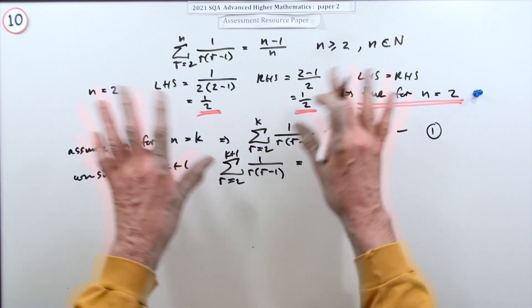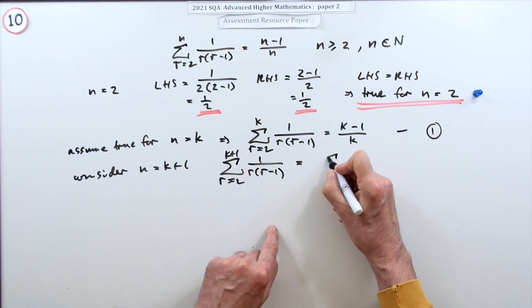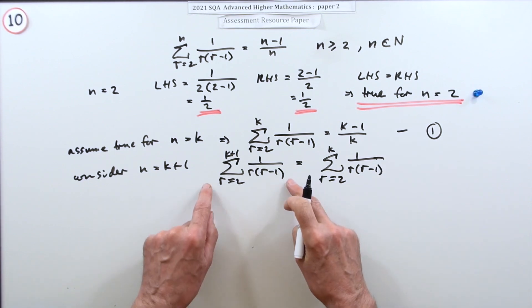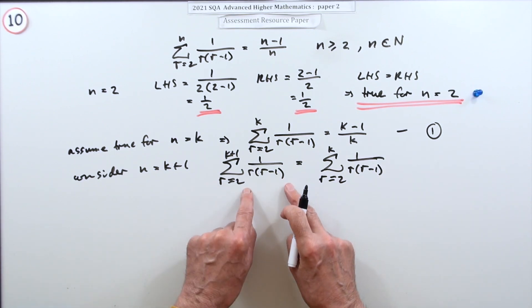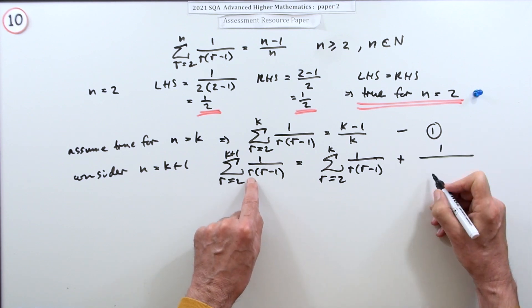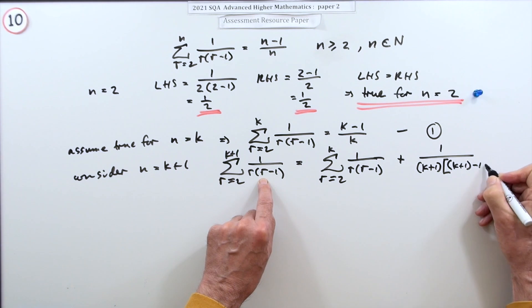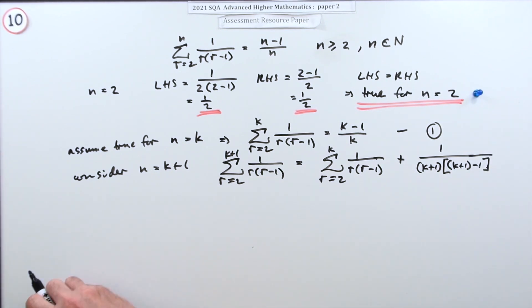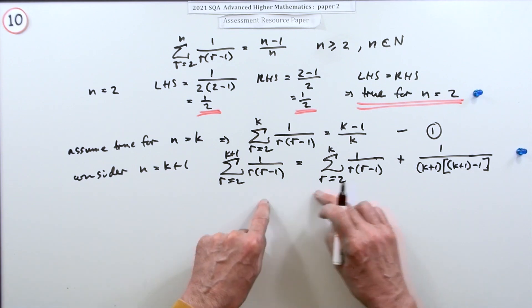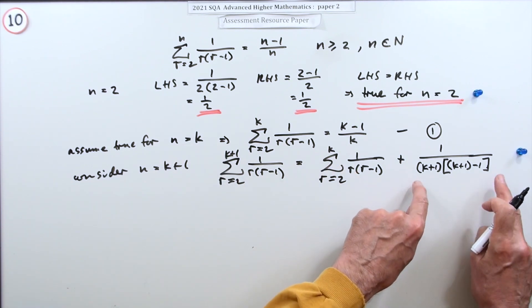Well, that should be - and this has nothing to do with the inductive hypothesis, it's just a simple algebraic fact - the sum of the terms up to k plus one must be the sum of the terms up to k plus that extra term, plus the term with k plus one in it. So plus these replaced by k plus one - so one over, and that would be a k plus one, and that would be, I'll just put a big bracket here, that would be a k plus one minus one.